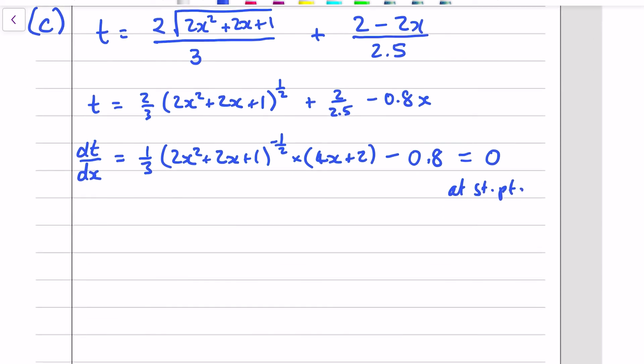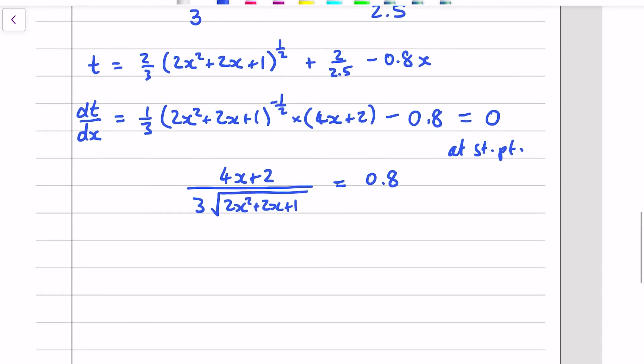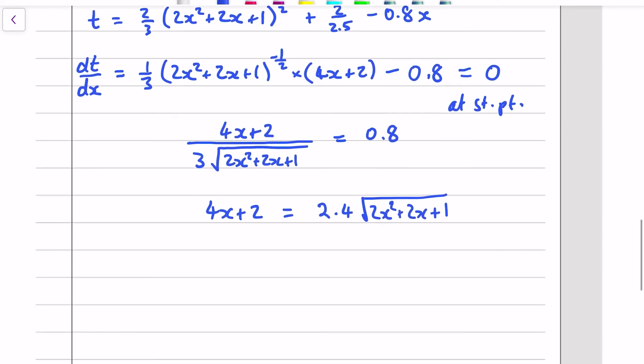I've got to solve this equation so again I'm going to tidy it up. 4X plus 2 all over 3 lots of square root 2X squared plus 2X plus 1 equals 0.8 and move the minus point out to the other side. Cross multiply 4X plus 2 equals 2.4 lots of square root 2X squared plus 2X plus 1. Square both sides.